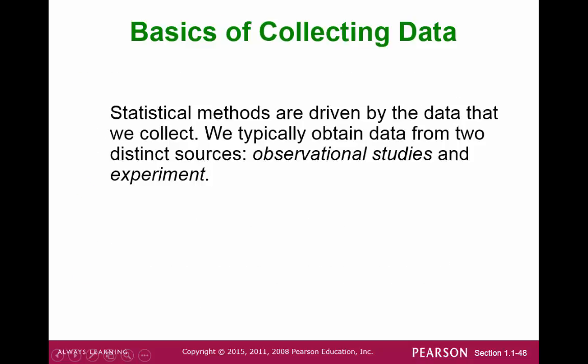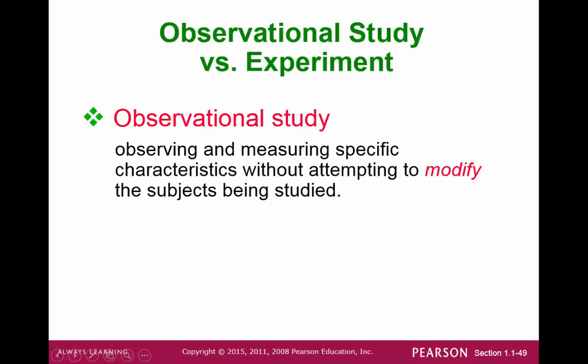Let's start with some basics. When we're dealing with a statistical method and we're collecting data, we're either collecting it for observational studies or we're collecting it through an experiment. An observational study is when we observe and measure specific characteristics without trying to change the ideas of the subjects being studied.